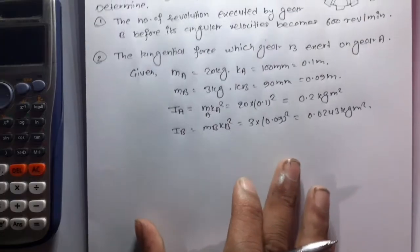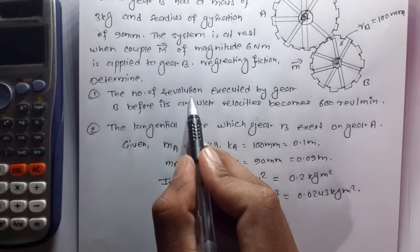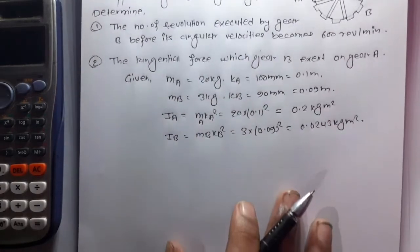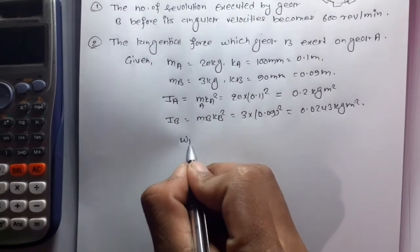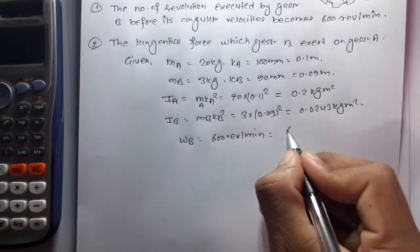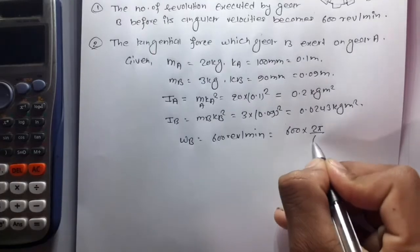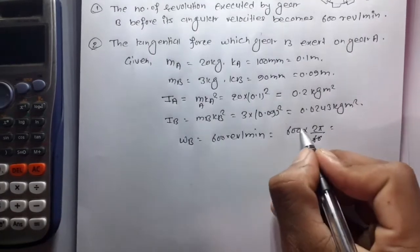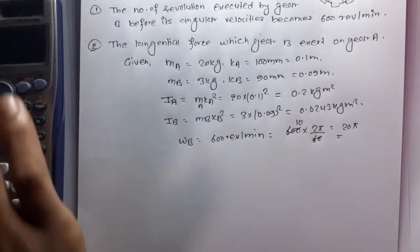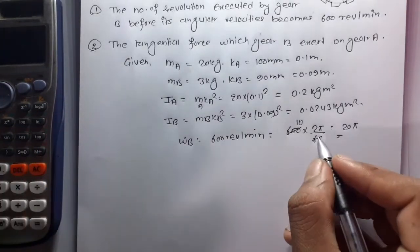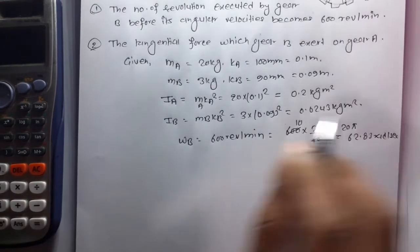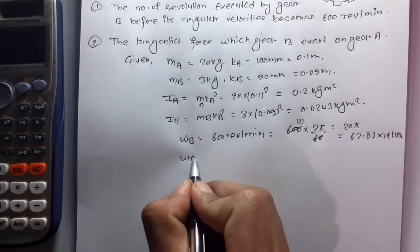We need to find the number of revolutions executed by gear B before its angular velocity becomes 600 RPM. So ωB = 600 RPM, converting to rad/s: 600 × 2π / 60 = 20π = 62.83 rad/s.